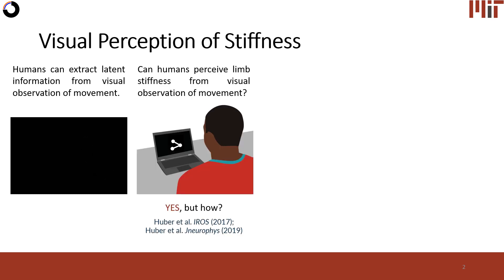This phenomenon led Hubert et al. to ask the question: can humans perceive limb stiffness from visual observation of motion? They found that yes, subjects could, which is remarkable considering that inherently stiffness is a relation between displacement and force, and in this experiment subjects had no direct access to force information. However, the question still remained how.